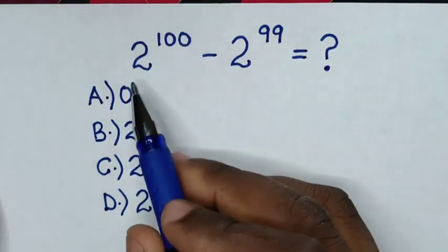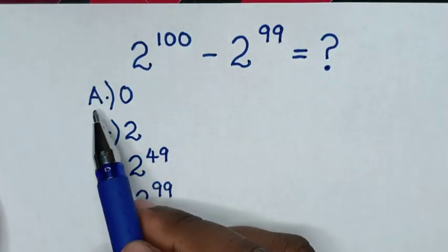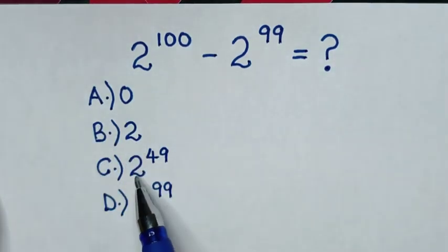Hello, how to solve 2^100 - 2^99 by selecting the answers: a) 0, b) 2, c) 2^49, d) 2^99.